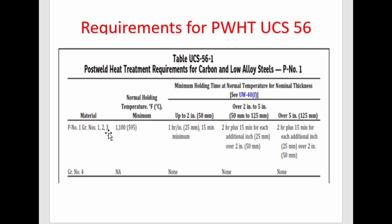Table UCS-56-1 is for P-Number 1, Group Numbers 1 to 3 material, and gives the minimum soaking temperature for different material thicknesses. For up to 2 inches: 1 hour per inch with a 15-minute minimum. For over 2 inches to 5 inches: 2 hours plus 15 minutes for each additional inch over 2 inches. For over 5 inches: 2 hours plus 15 minutes for each additional inch.